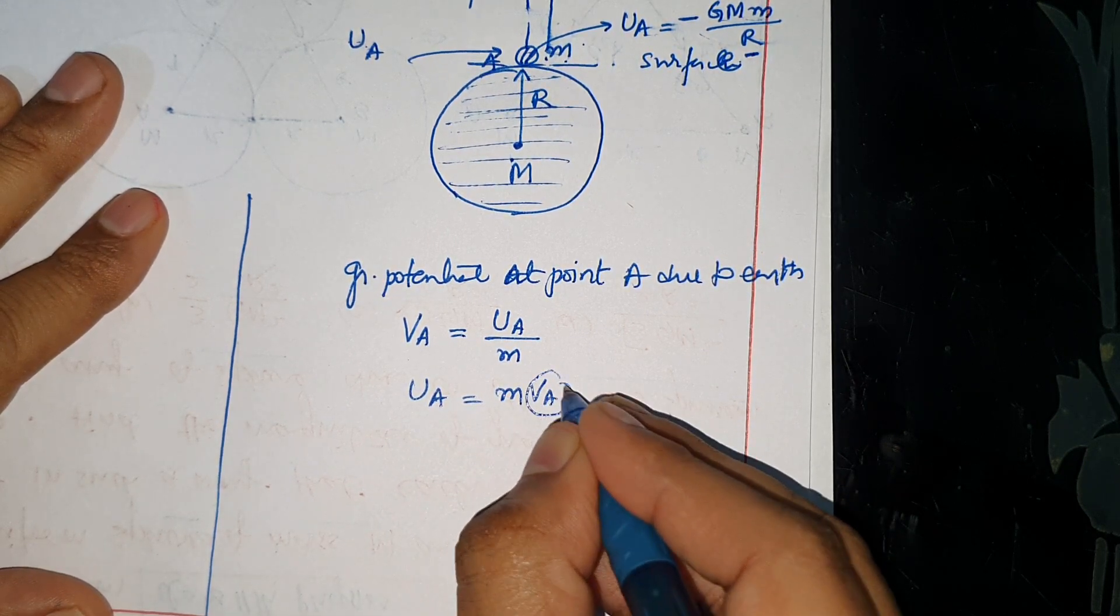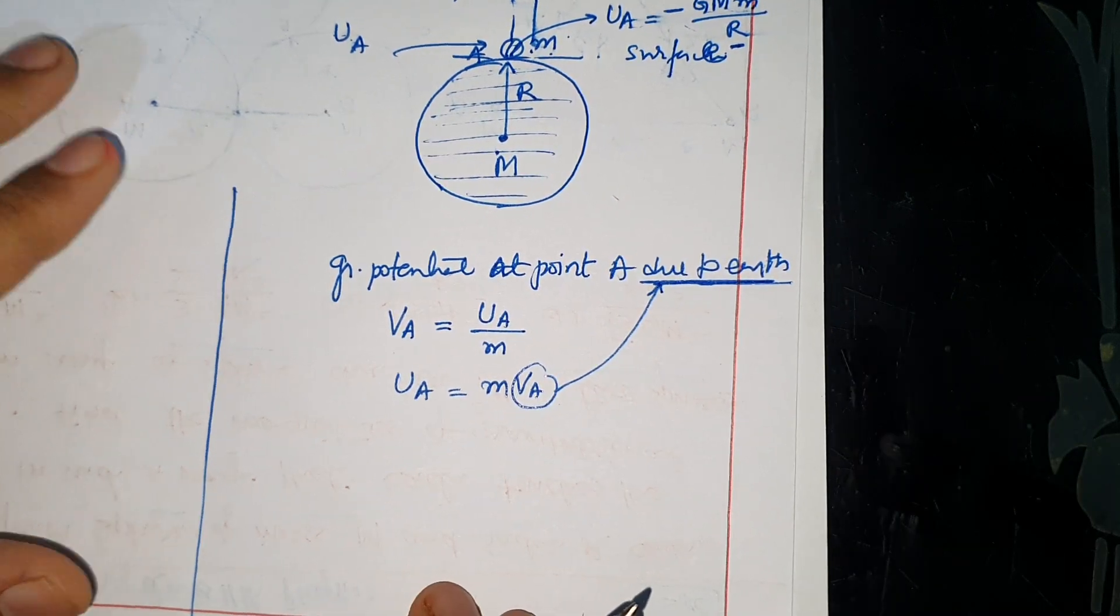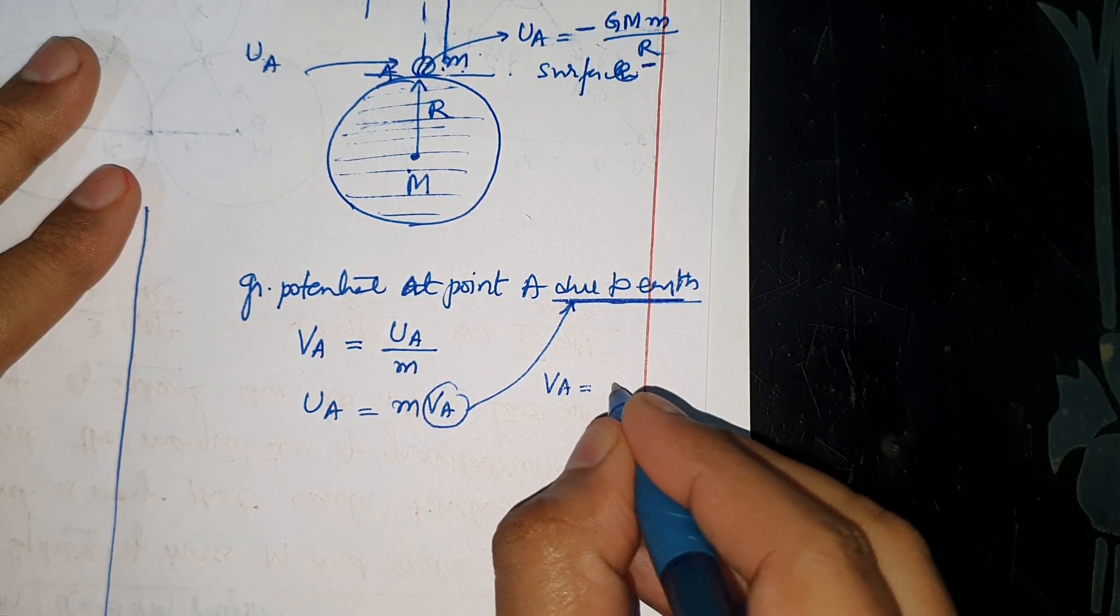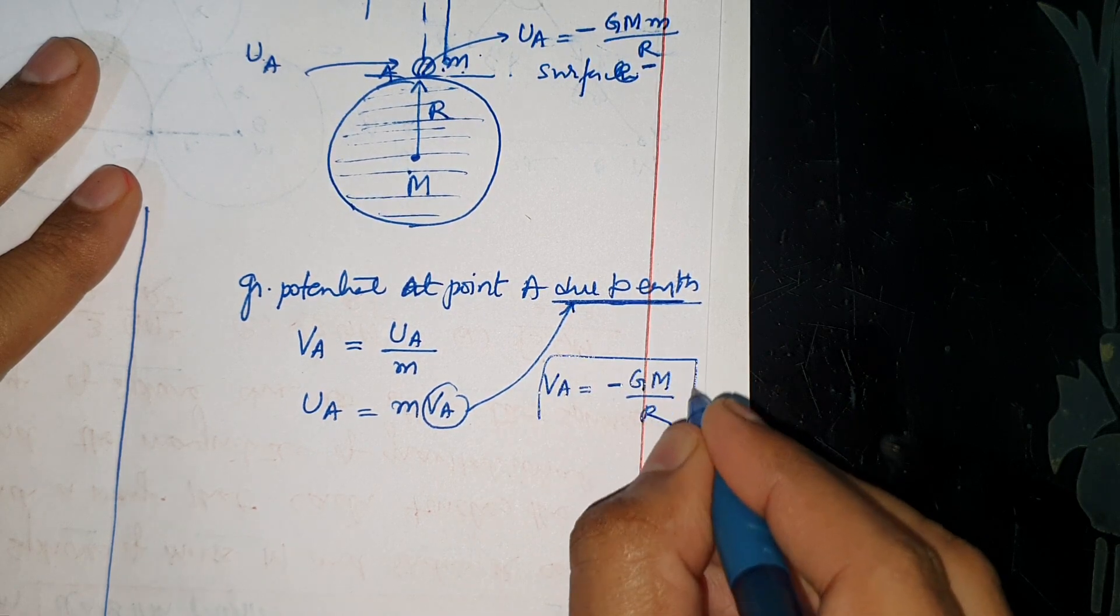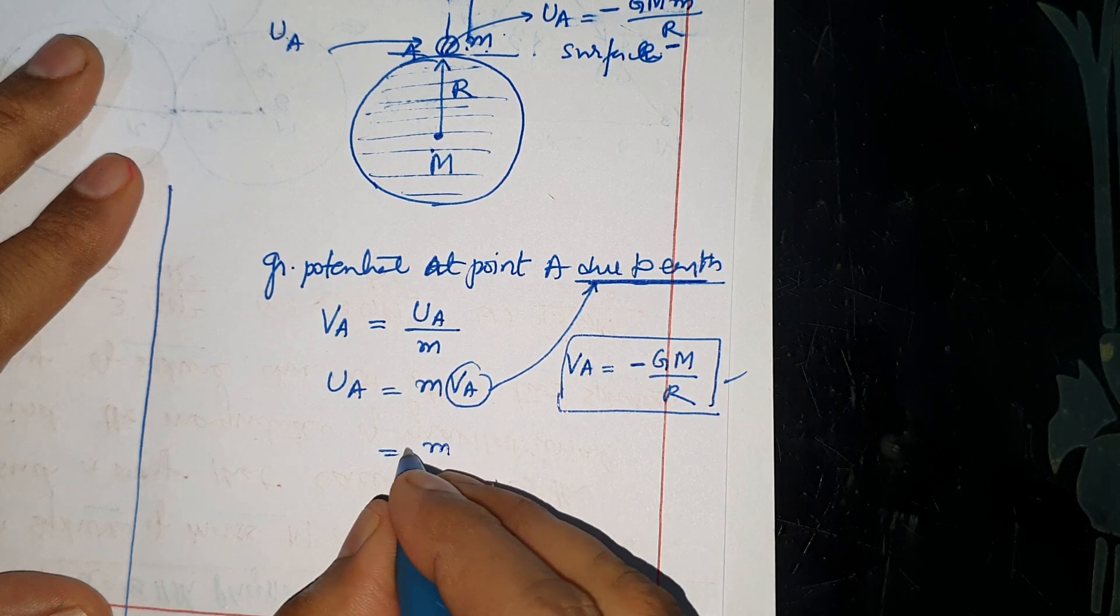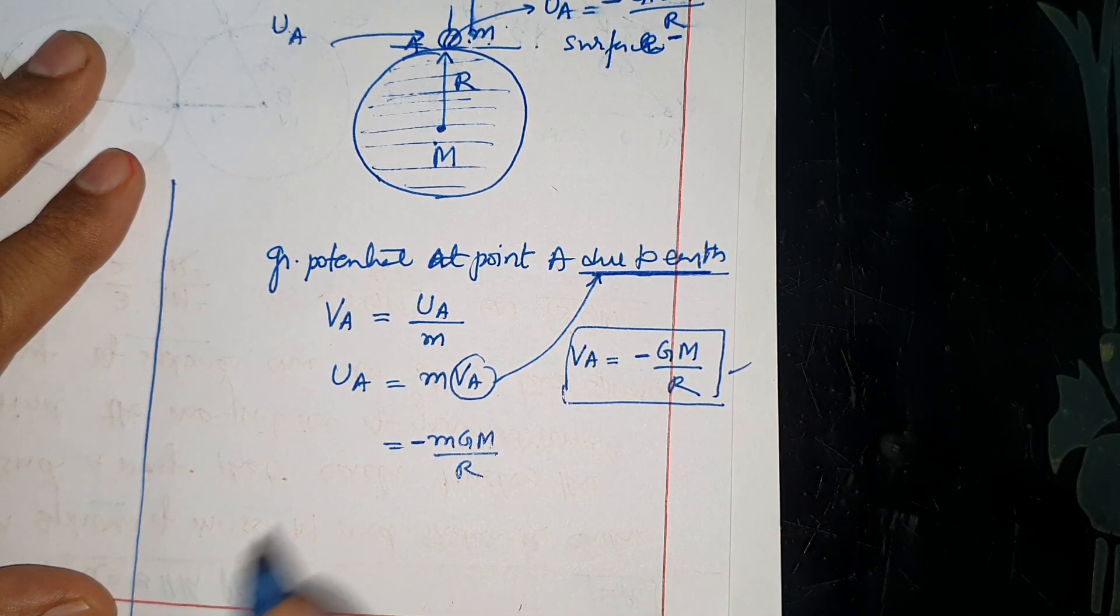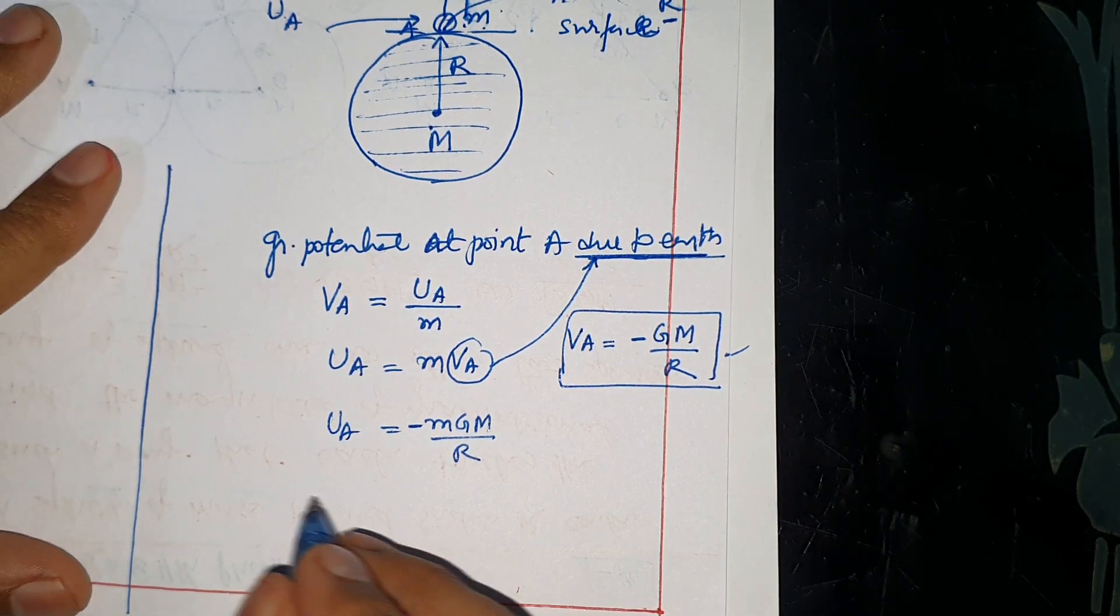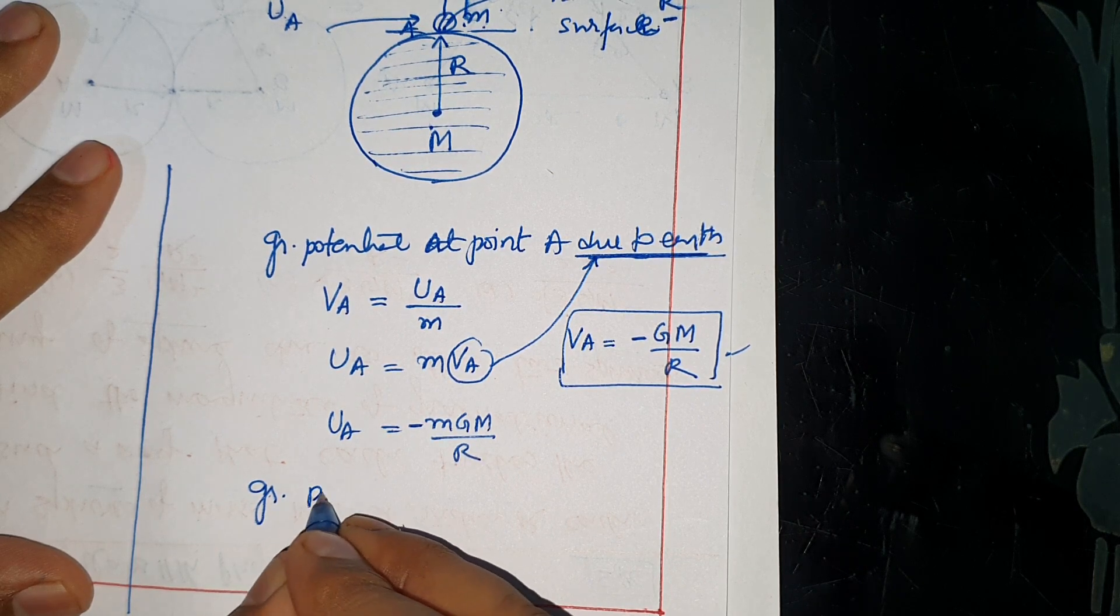The Va here is gravitational potential due to Earth. The potential at Earth's surface is Va equals minus G capital M over capital R. The potential at the surface we'll put here: small m times minus G capital M by R.